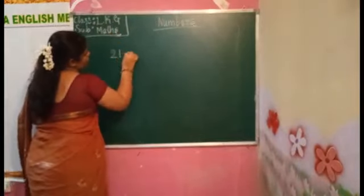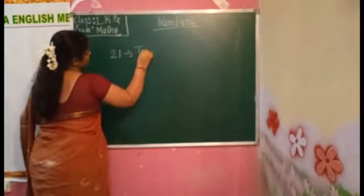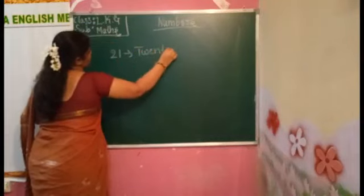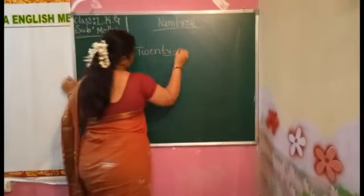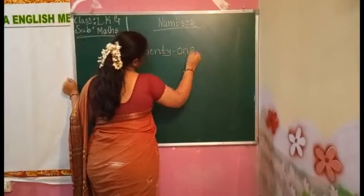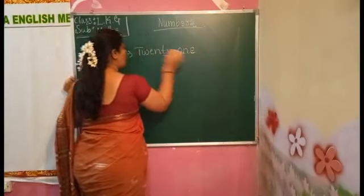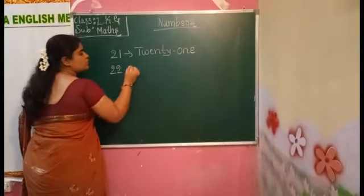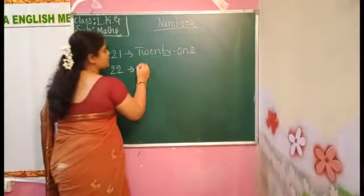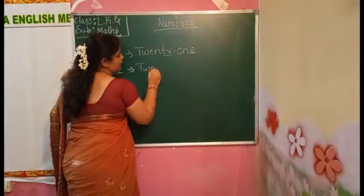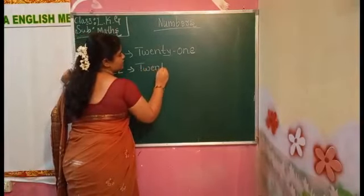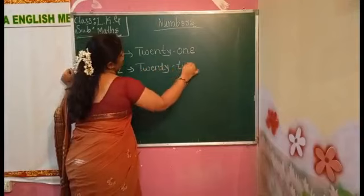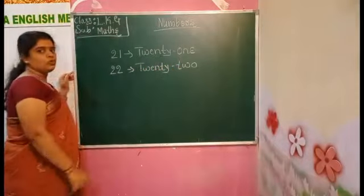21. The number name of 21 is spelled T-W-E-N-T-Y O-N-E. 21. Then 22 — the number name of 22 is T-W-E-N-T-Y T-W-O. 22.